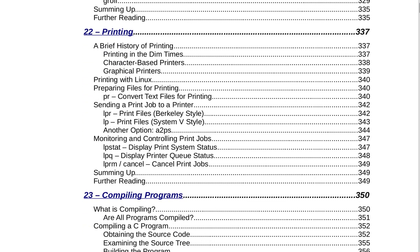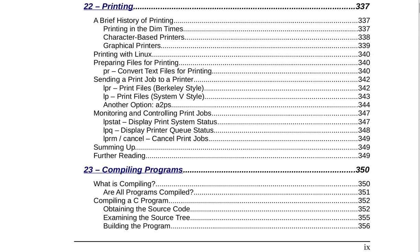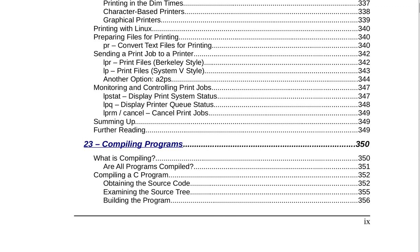Section 22 is Printing on page 337. That includes a brief history of printing, printing in the dim times, character-based printers, graphical printers, printing with Linux, preparing files for printing, pr to convert text files for printing, sending a print job to a printer, lpr to print files Berkeley style, lp to print files System V style, a2ps as another option, monitoring and controlling print jobs, lpstat to display print system status, lpq to display printer queue status, lprm and cancel to cancel print jobs, summing up, and further reading on page 349.